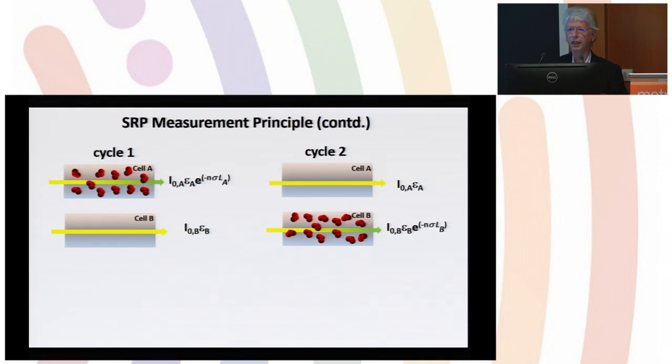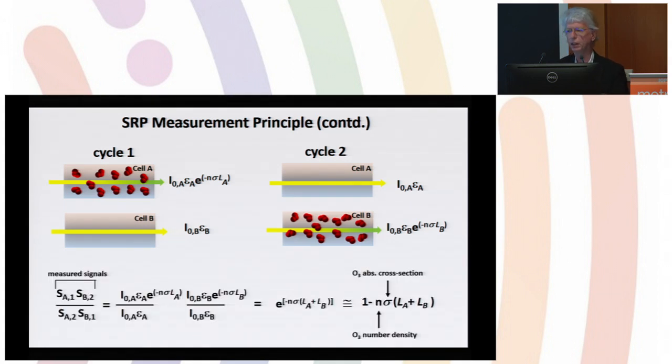The actual SRP instruments involve two cells in parallel in an anti-symmetric fashion where in cycle one you fill one with ozone, the other one is just air, then you repeat cycle two and invert the sample gas. You have a common lamp and common detector. If you're doing this ratioing technique, all the common factors of transmission and reflection cancel out.